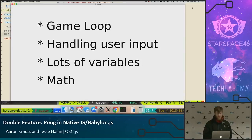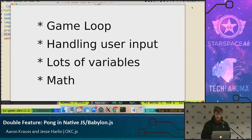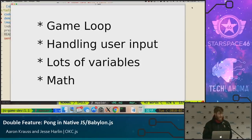The second two principles are: there's a lot of variables involved with game development — you have to track the state of a lot of different things, so you'll see a lot of variables today. And then math. I remember when I was learning programming, I was constantly told you're going to use a lot of math. In regular programming, I never really use math — just adding things, maybe modulus division. But with game development, there's a lot of math all the time. You're going to see more math today than you would with normal programming.